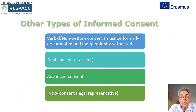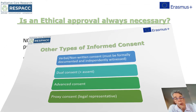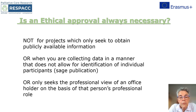Besides the signed informed consent, there may be verbal and non-written forms, but these must be witnessed by an independent witness. There is dual consent — for instance, when a teenager with a guardian needs both to sign, but the teenager can also provide assent. Advanced consent means asking the patient for consent to something that may happen in the future. Proxy consent is used when we have a legal representative for the patient. Informed consent is required when collecting data in a manner that allows identification of participants, but not when obtaining the views of officers.